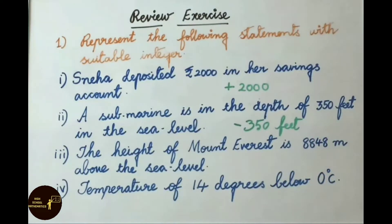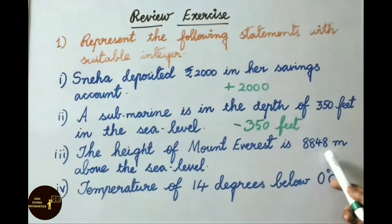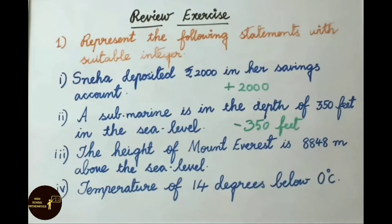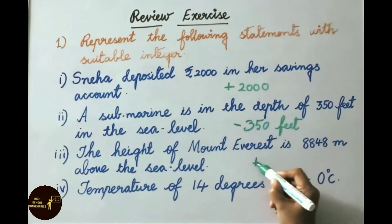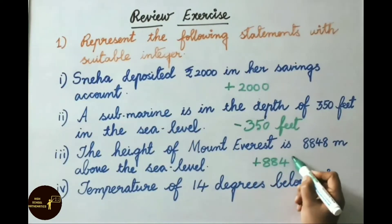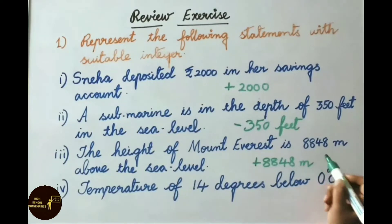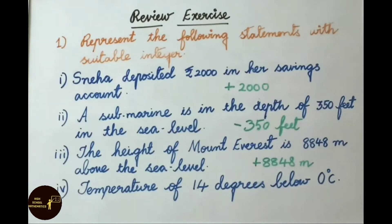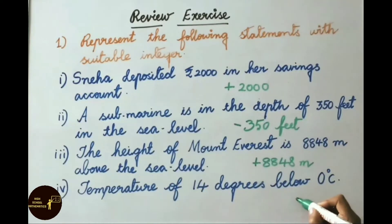Third: The height of Mount Everest is 8,848 meters above sea level — above sea level is positive, so the answer is +8,848 meters. Fourth: Temperature of 14 degrees below 0°C — below 0 is negative, so the answer is -14°C.